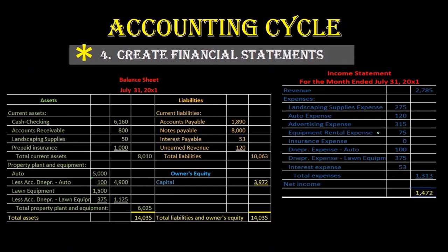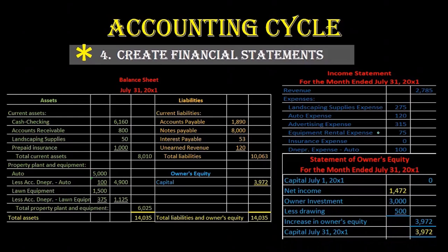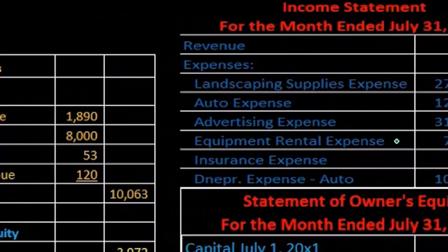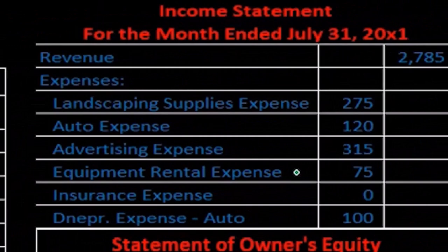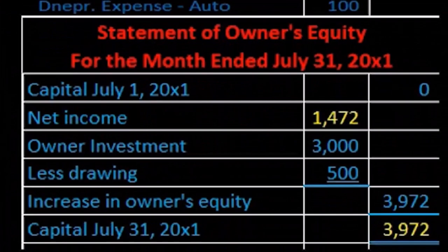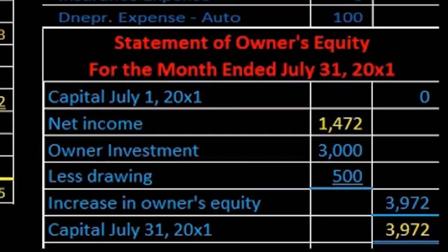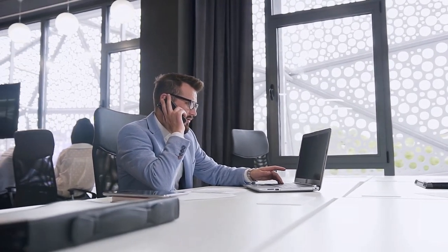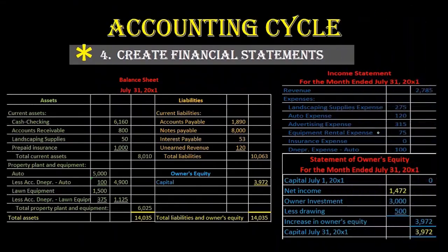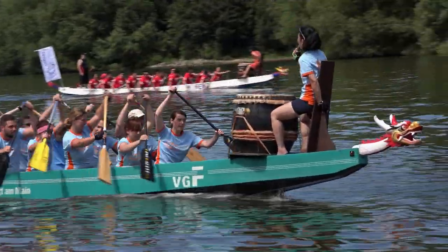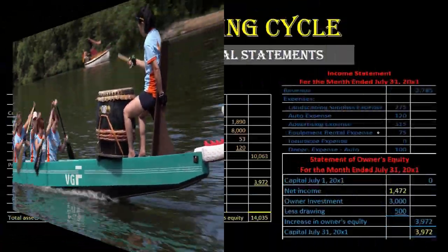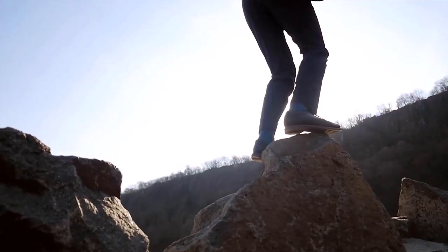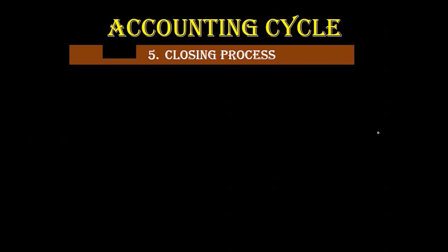The end product — the balance sheet, the income statement, and the statement of owner's equity — is what we're trying to get to in financial accounting. This is our product going out to external users, and it's also mainly the basis for managerial accounting reports used internally. This is the main event. You might think it should be the last step, being the main event, but it's not.